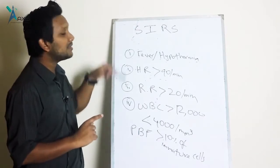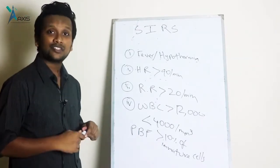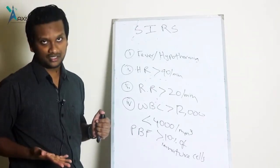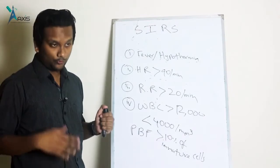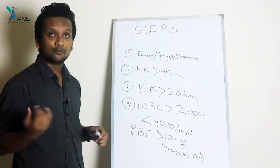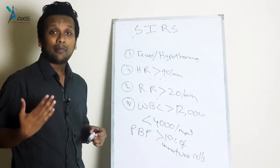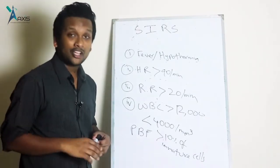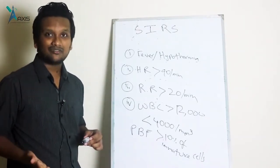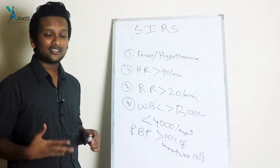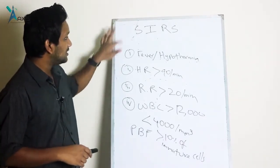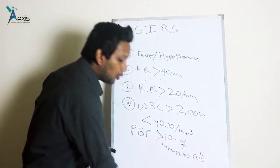Systemic inflammatory response syndrome may or may not be caused by an infection. For example, non-infective conditions which cause SIRS include pancreatitis, myocardial infarction — that is a heart attack — and mesenteric infarction. So all these non-infective conditions can also present with the features of SIRS.